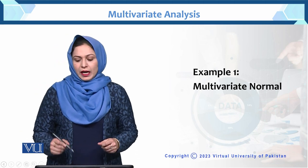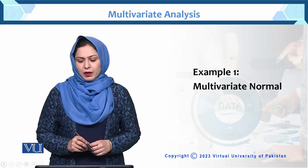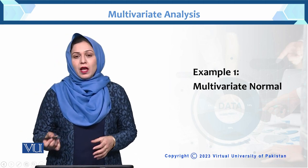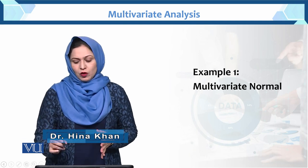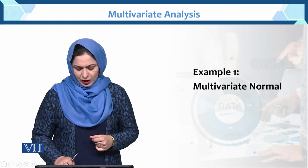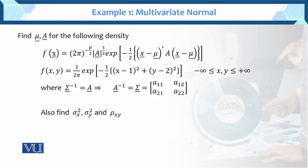Dear students, in this example we are going to learn how to find the mean vector and correlation by using the density function. We need to find the mean vector and the variance-covariance matrix A for the following density. This is the multivariate normal density, and this is the joint function f(x,y) which is equal to this expression.